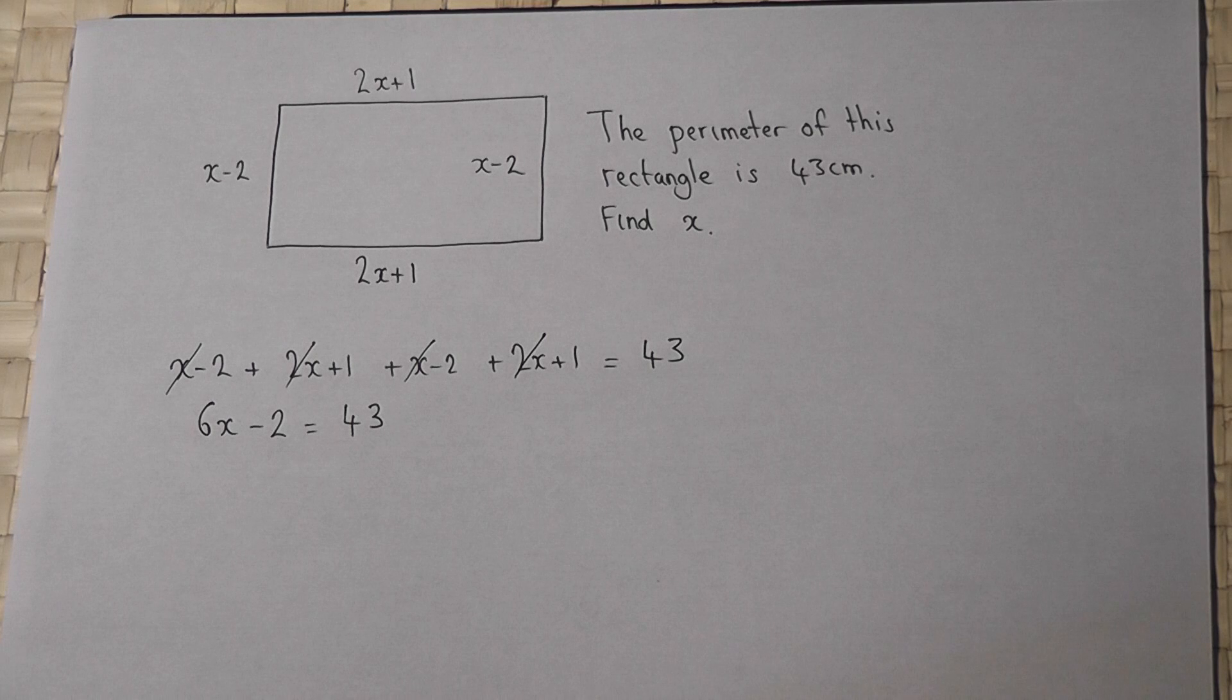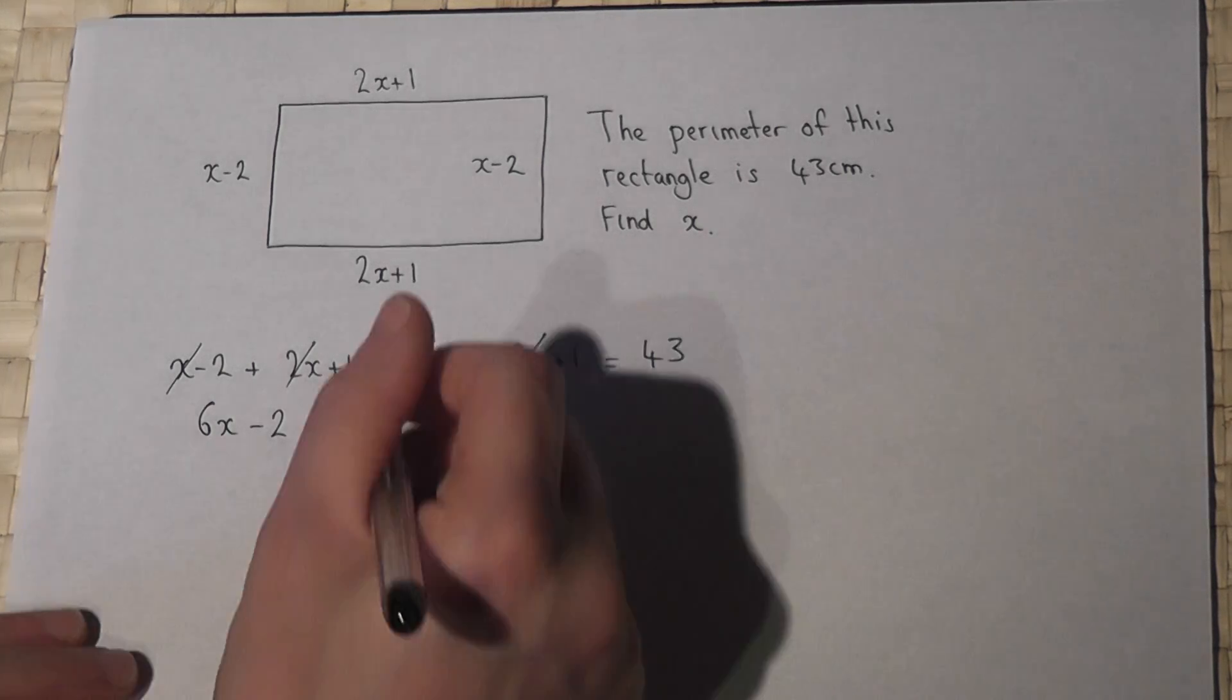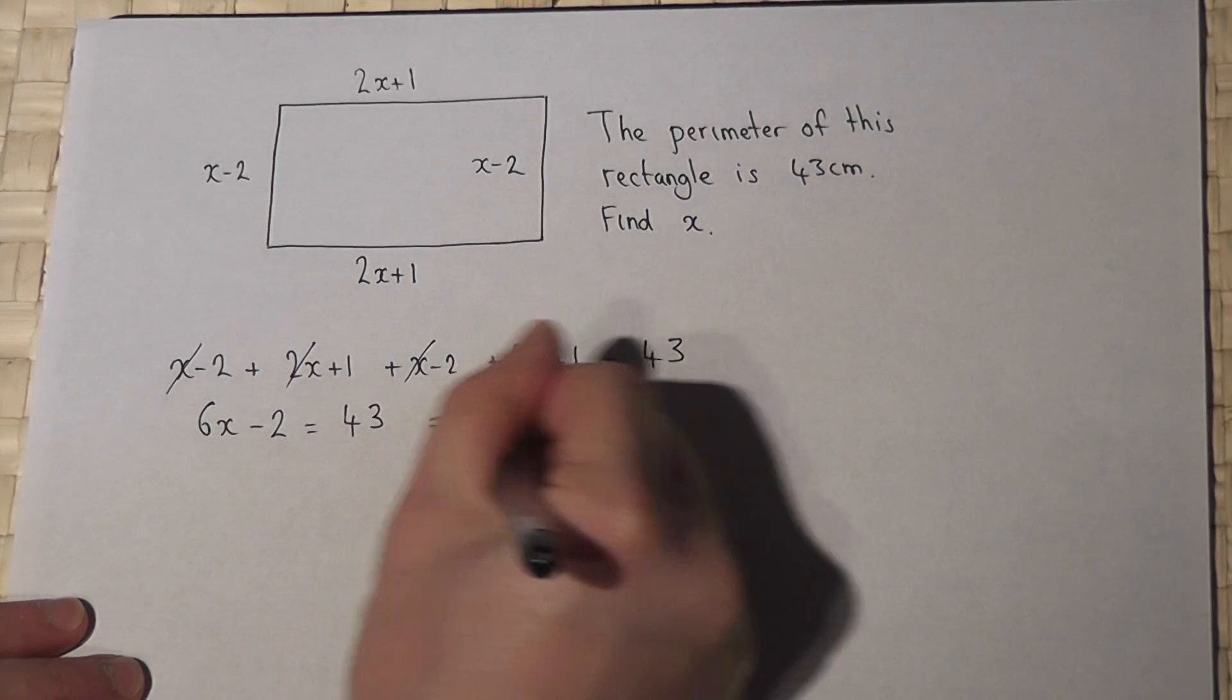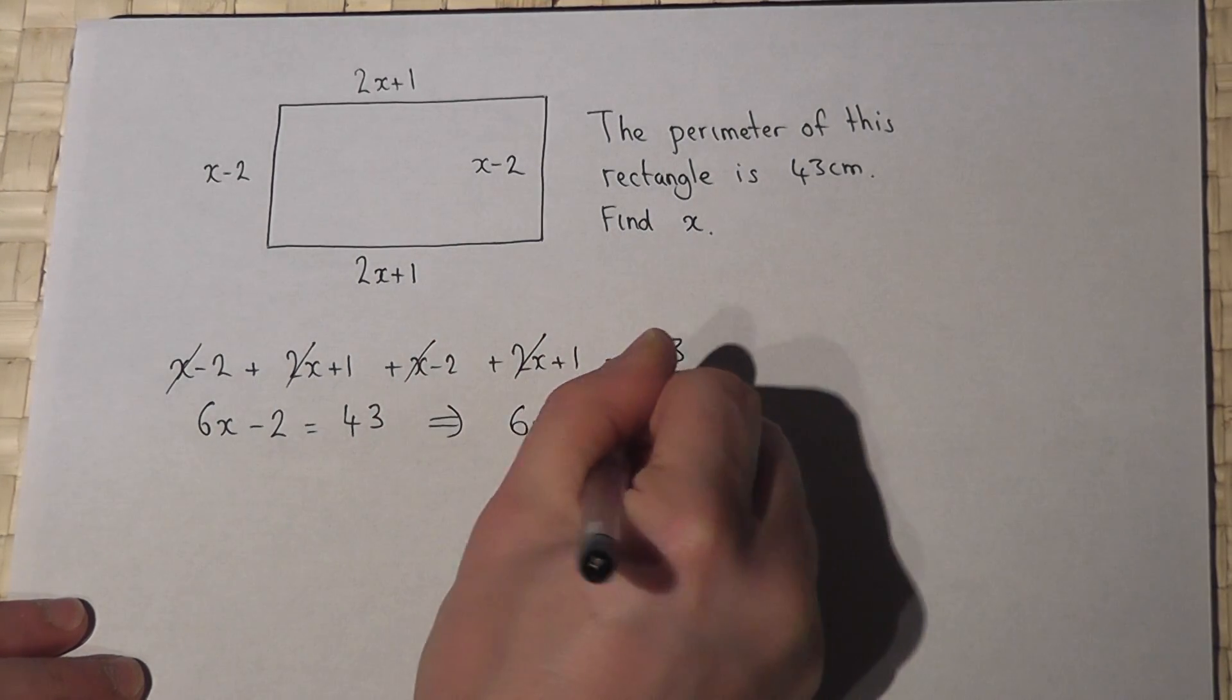I then solve this equation just by using my normal equation solving techniques. So if I add 2 to both sides, I get 6x equals 45.